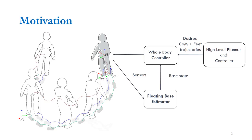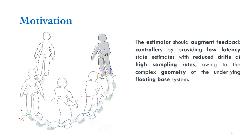A common approach for developing locomotion controllers for humanoid robots involves a high-level planner and controller generating desired center of mass and foot trajectories. These are passed to a whole body controller which creates the necessary actuation commands. To be robust to model uncertainties and unpredictable environments, a floating base estimator that fuses distributed sensor information is necessary. In particular, the estimator should provide low-latency state estimates with reduced drifts at high sampling rates, accounting for the complex geometry of the underlying floating base system.